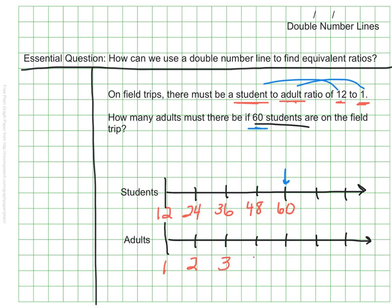plus another, plus another, and plus one more. At this point, my number line is matched up under 60. My goal was to figure out how many adults there would be with 60 students, and I can see on my double number line that when there are 60 students, there need to be 5 adults.